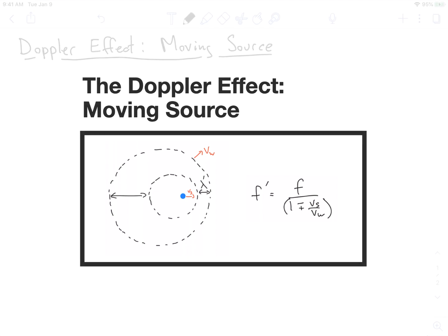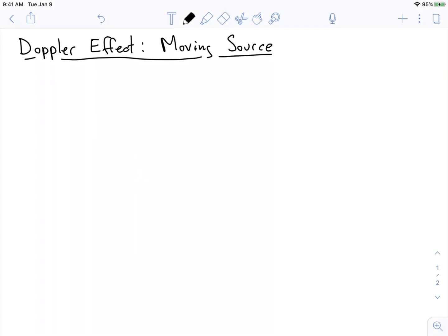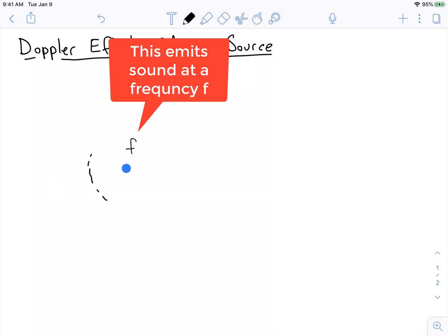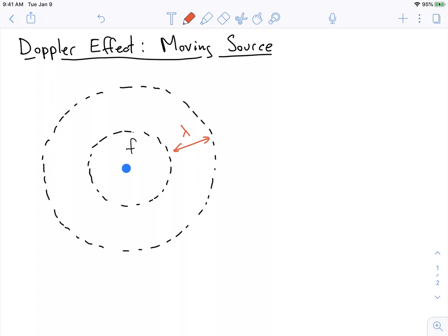The first thing to think about is what happens just with a stationary source. A stationary source emits sound in wavefronts — these wavefronts come out and they have a wavelength lambda, and they move at some velocity v. All of these wavefronts are moving away from the source at velocity v. After a little bit, each wavefront reaches me, and the rate at which these peaks hit me gives me the frequency of sound I hear.